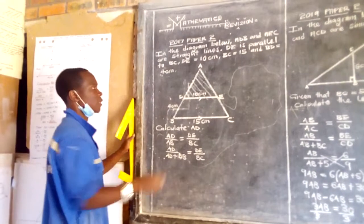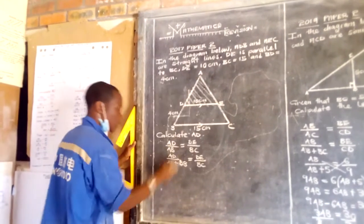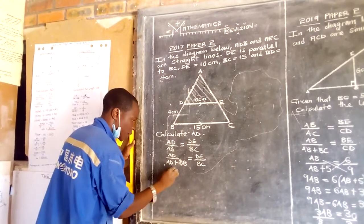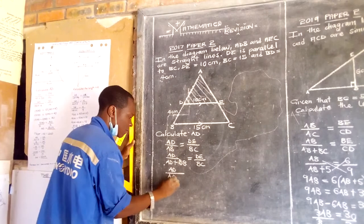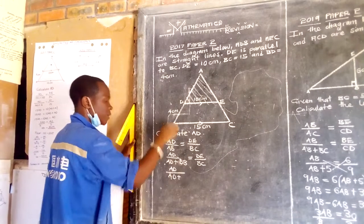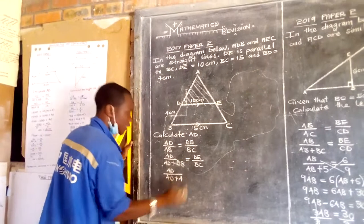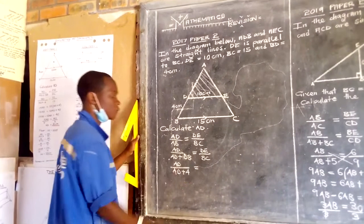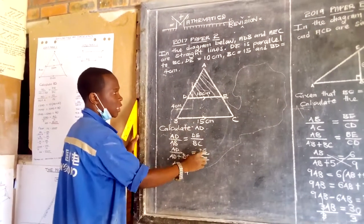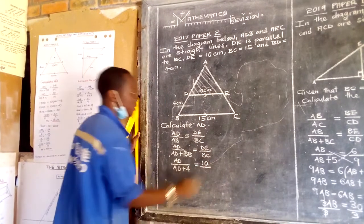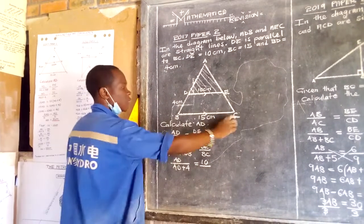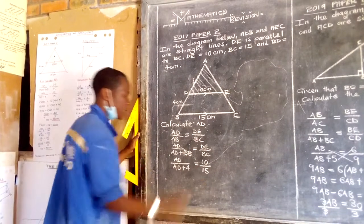Then just start substituting. Do we have our AD? No. So AD is what you are calculating over AD plus, what about DB? DB has been given, it's 4 centimeters. It is equal to DE, DE has been given, it's 10 centimeters. So you maintain 10 centimeters. BC has been given, it's 15 centimeters.